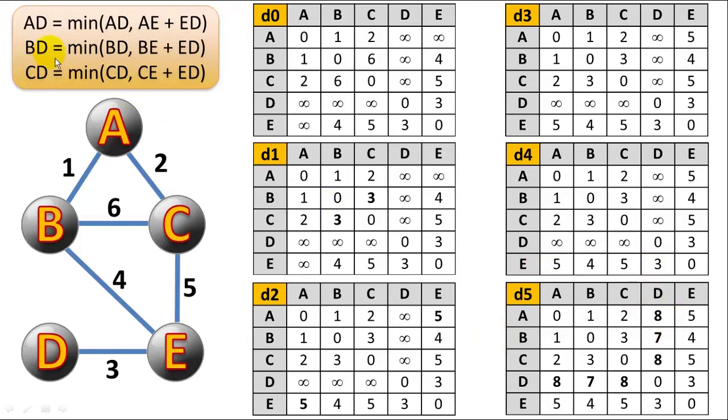And then B to D equals the minimum of B to D, which is infinity, or B to E plus E to D. B to E is four, and E to D is three. So that gives us a cost of seven for B to D by passing through vertex E. So we change this to seven.